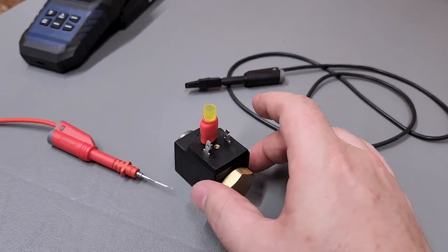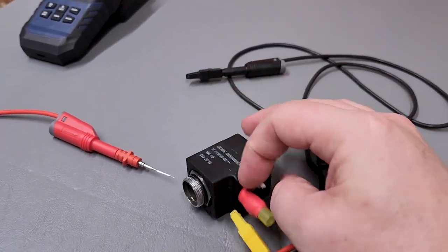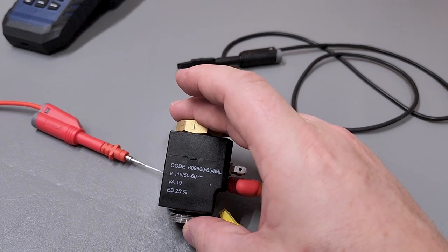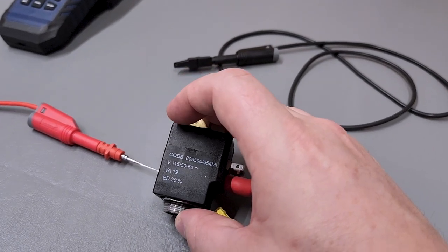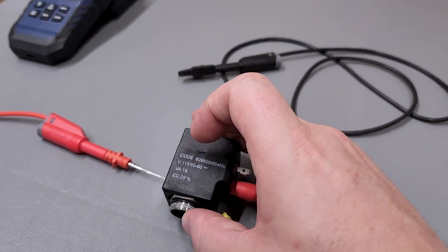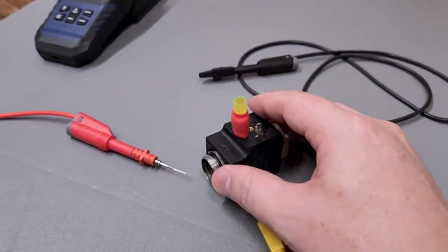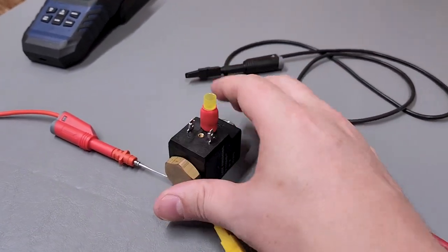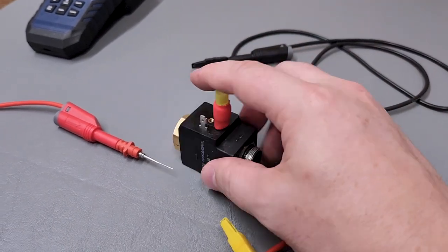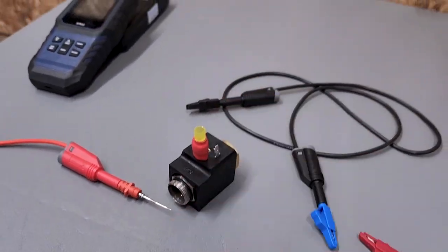So anyway we have coil minus and plus or line and neutral whatever you want. This is a 115 volt mains AC coil and you can see that it has an ED of 25% which is the little duty cycle. So it's a 25% duty cycle if I remember correctly. So anyway here we go let's go ahead and hook it up.